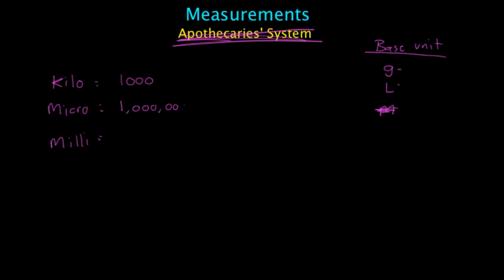A microgram is going to be one millionth of a gram, and a milliliter is going to be one thousandth of a gram.